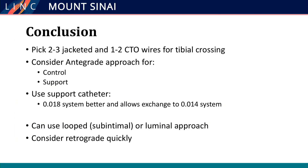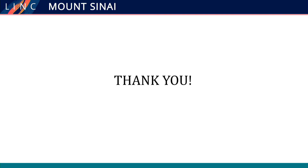In summary: pick two or three jacketed wires, pick one or two CTO wires that you are familiar with, consider the antegrade approach but quickly move to the retrograde approach if you cannot cross antegrade, and then use a support catheter. I use the 018 CXI because it's braided, and it allows me to travel between 014 and 018 in crossing tibial vessels. Thank you.